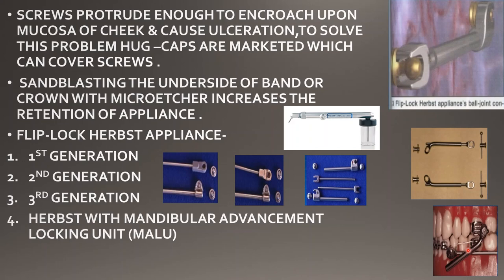Because of the MALO, there is advancement of the mandibular arch, which is all we want from the Herbst appliance — to treat Class 2 malocclusion where there is a retrognathic mandible and we want advancement of the mandible. These were all the modifications of the Herbst appliance. This was all about the Herbst appliance — I hope you found this video helpful.